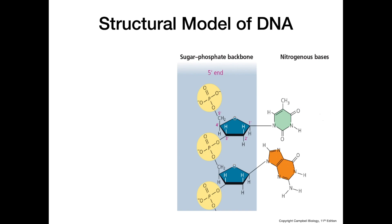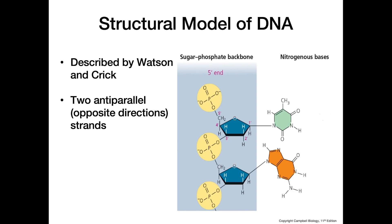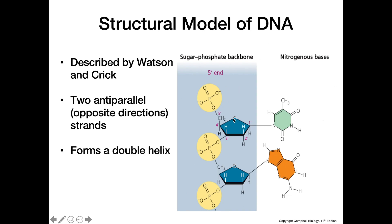Moving on to the structural model of DNA — what the structure actually looks like. This structure was described by Watson and Crick, who figured out that DNA is composed of two anti-parallel strands, meaning the two strands run in opposite directions. For example, if one strand has its five-prime end at the top, the complementary strand's five-prime end will be at the bottom. It's important to remember that two five-prime ends are never right next to each other — they're always on opposite ends. These two strands form a double helix, twisting around each other, just as seen in every illustration of DNA.